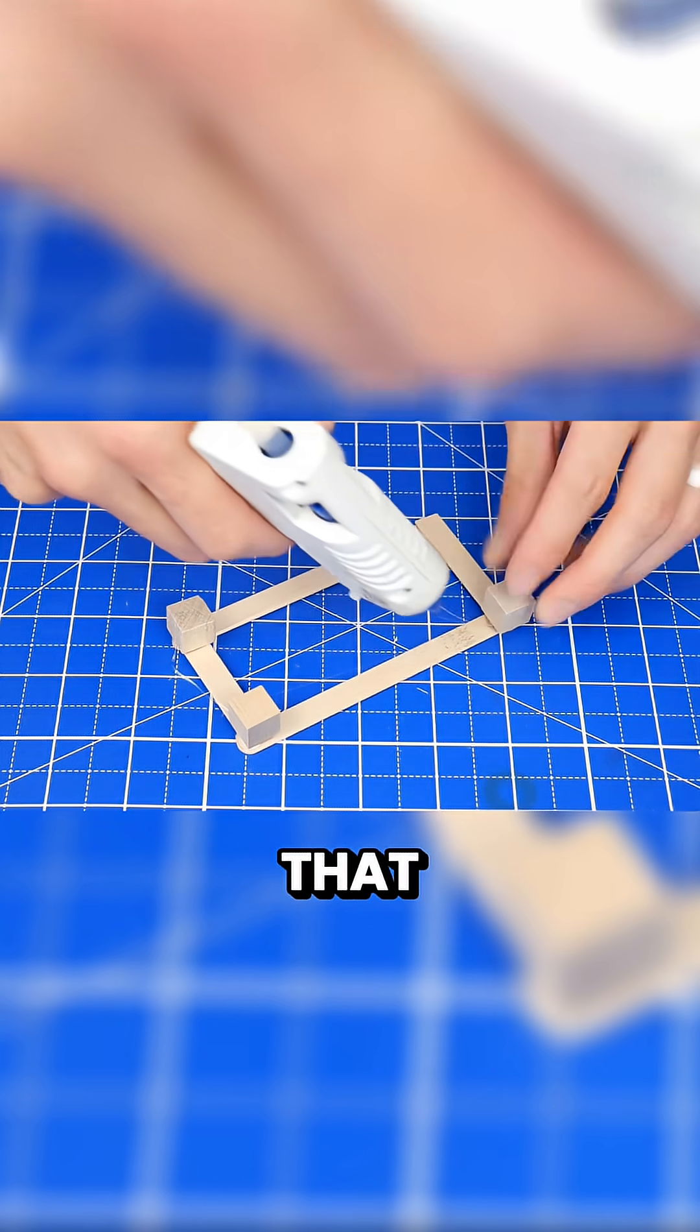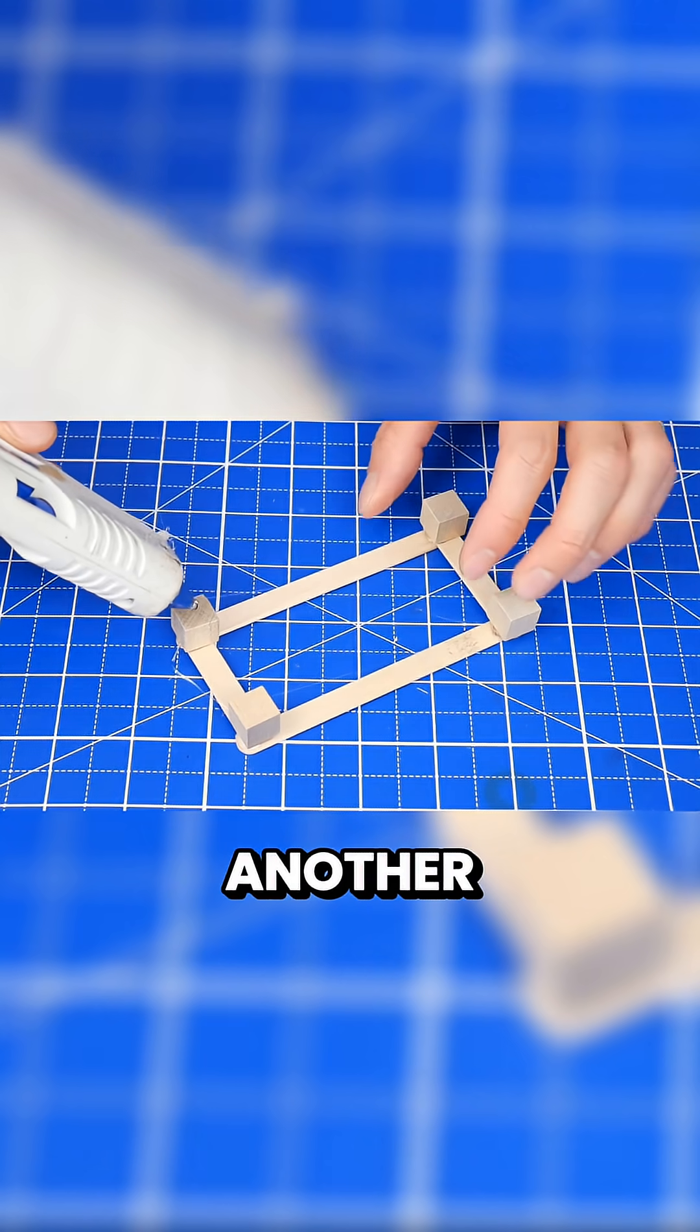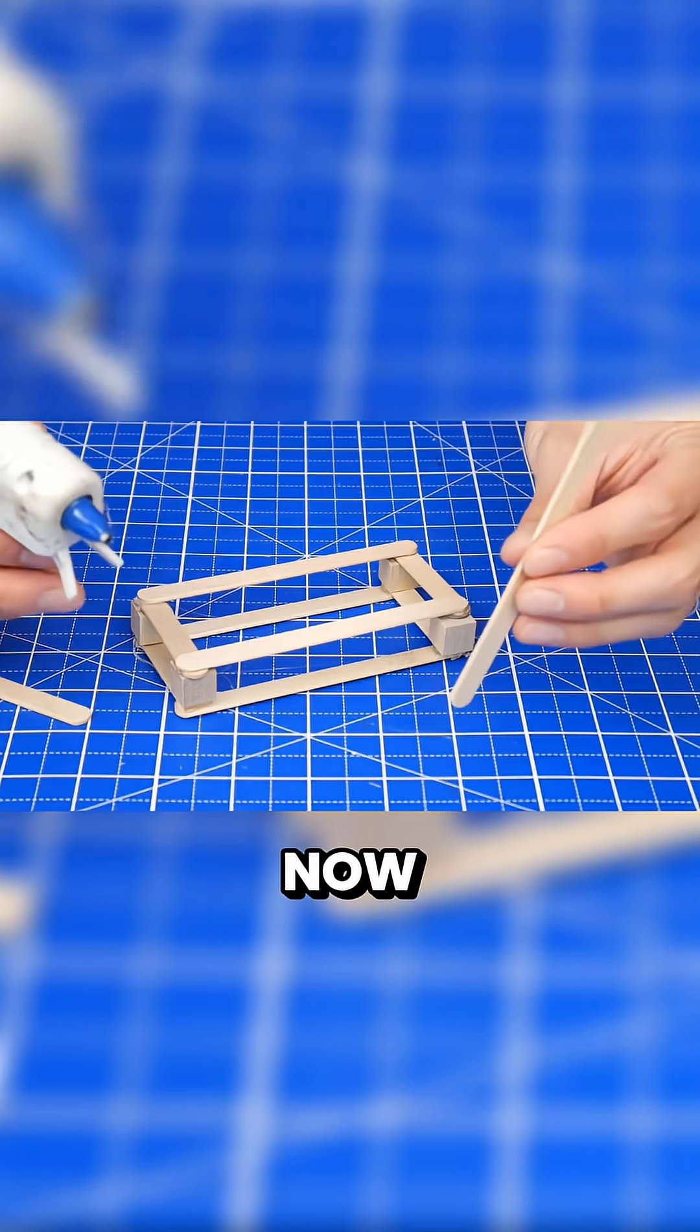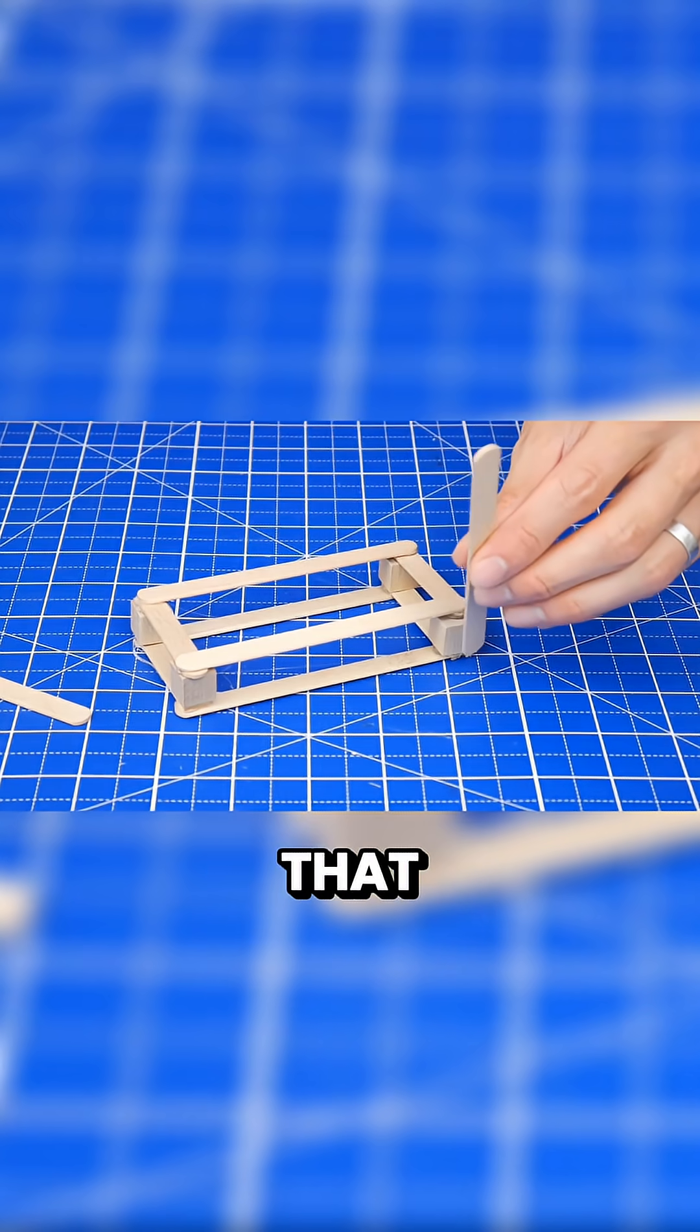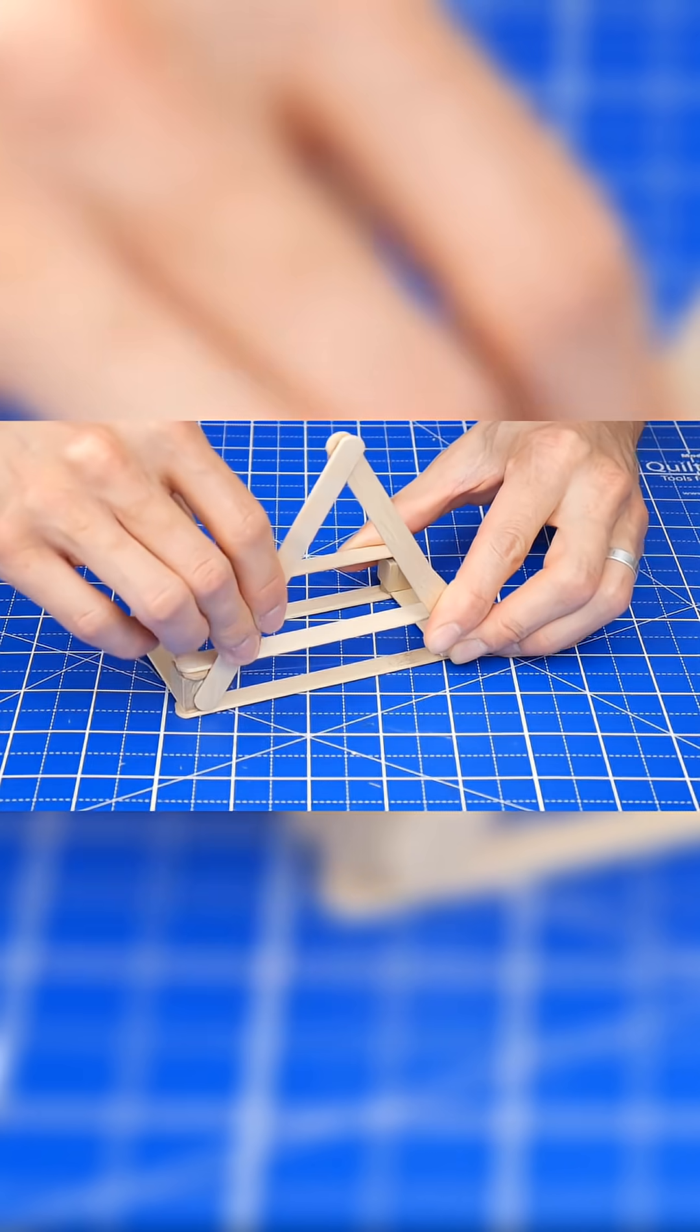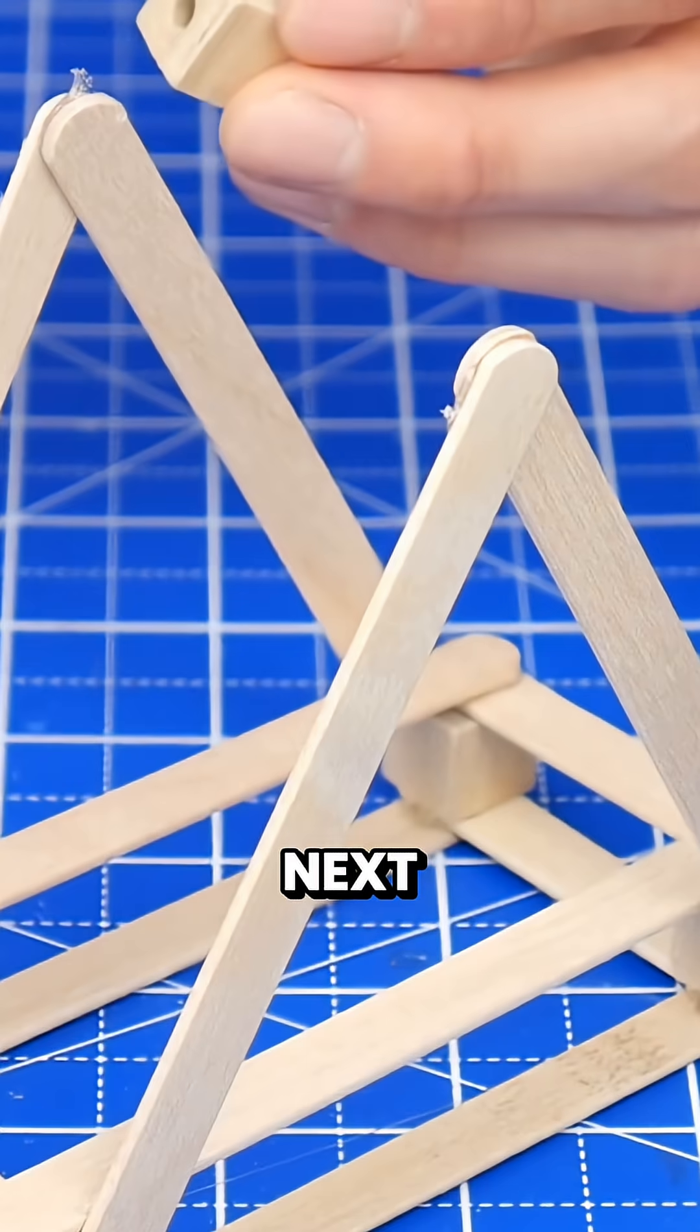After that, glue another rectangle on top of those cubes. Now we're going to build the sides of the catapult that are going to hold the hinge.